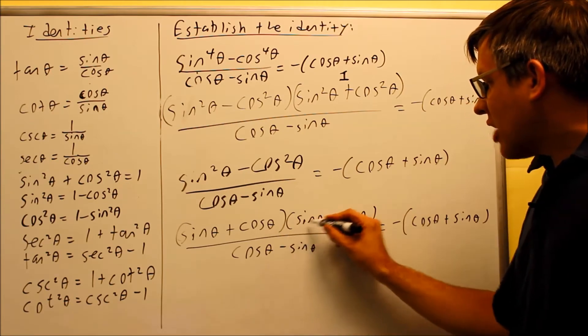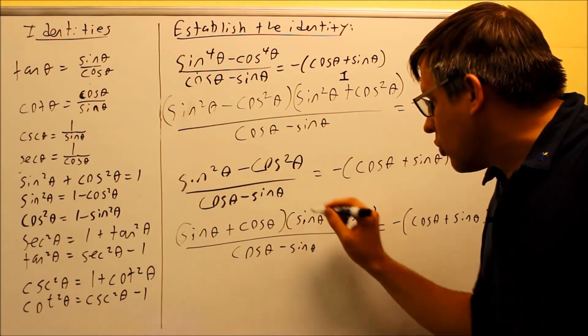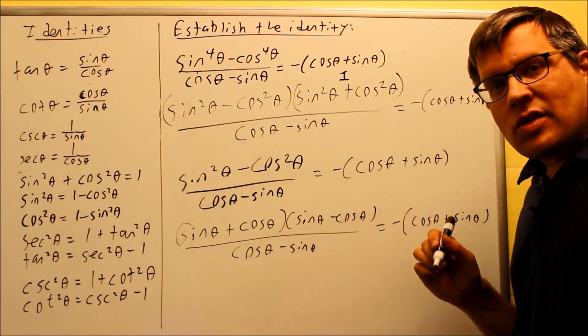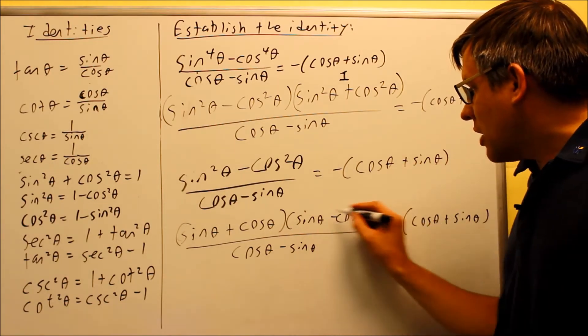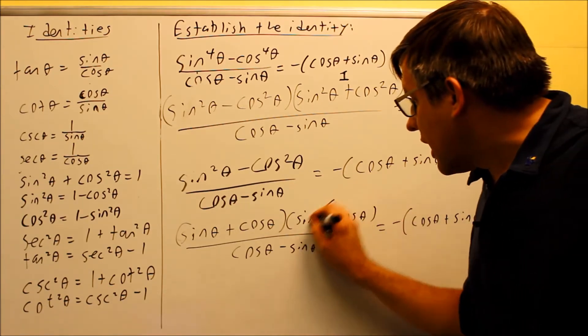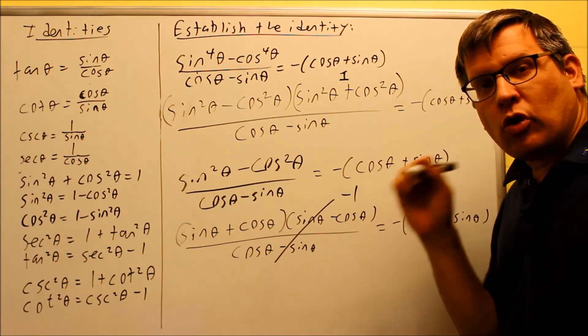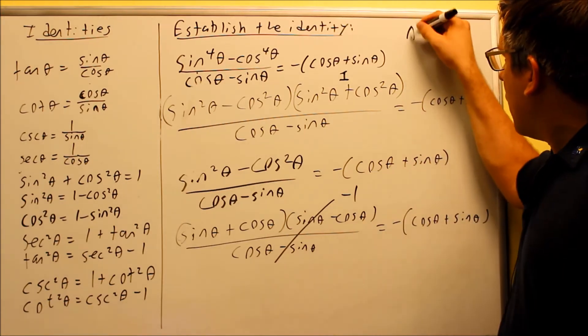Now what I notice here is I have sine minus cosine and cosine minus sine. There's a rule from algebra that says that if you have the same thing on top and the same thing on the bottom except that the order is reversed with a minus sign, you're actually allowed to cancel those out. However, that's going to leave you with a negative one.